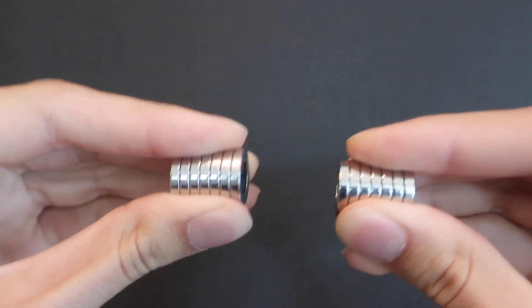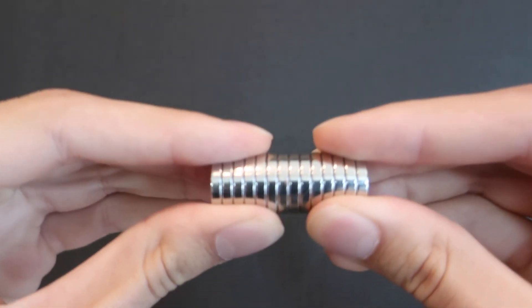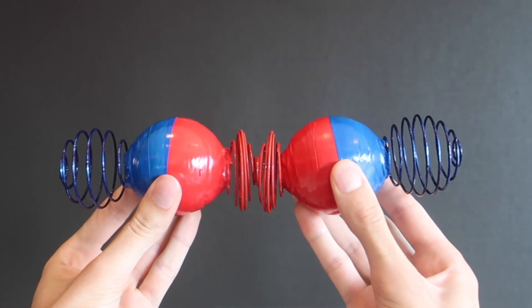We all know that like poles of a magnet repel, and opposites attract. But why? Well, a magnet creates a magnetic field, like so, but when you force a repelling magnet near it, the two fields push against each other, analogous to two springs.